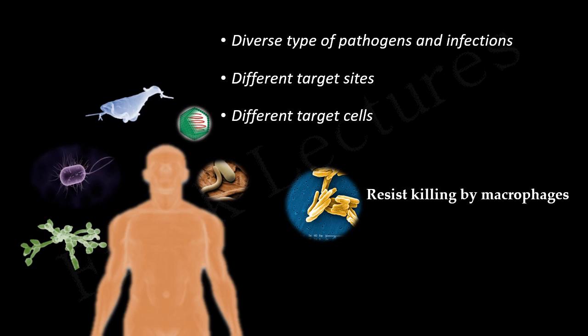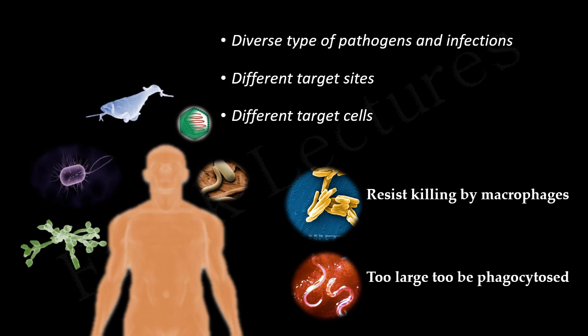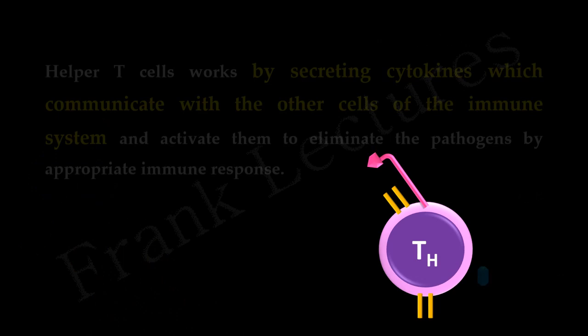For example, some pathogens such as mycobacteria are ingested by the phagocytes but they resist intracellular killing. On the other hand, parasites such as helminths are too large and cannot be phagocytosed. So each of these pathogens is eliminated by a different form of immune response. Helper T cells aim to fight against such diverse types of pathogens effectively.